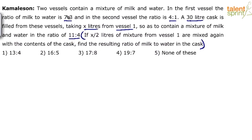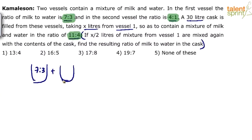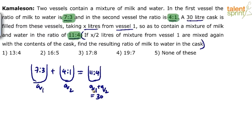This is like any other allegation and mixtures problem. One vessel has a 7:3 ratio, the other has 4:1; when you mix them you get 11:4. Apply the allegation rule to find the ratio in which the two quantities — vessel 1 (q1) and vessel 2 (q2) — have been mixed. We also know that q1 plus q2 equals 30 liters, so once we get the q1:q2 ratio we can find the individual quantities.